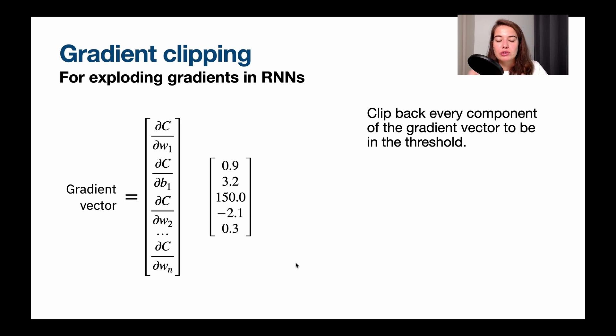We will clip these values to be between the threshold that you determined. So let's say the threshold that we determined is minus 1 and 1. What's going to happen is that, okay, I'm going to say this guy is fine. It's 0.9, doesn't need to be clipped.